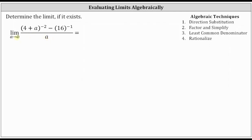Let's first write the expression for the function using positive exponents. The quantity four plus a to the power of negative two is equivalent to one divided by the quantity four plus a to the power of positive two. Then we have minus 16 to the power of negative one, which is equivalent to 1/16. And this is still all over a.